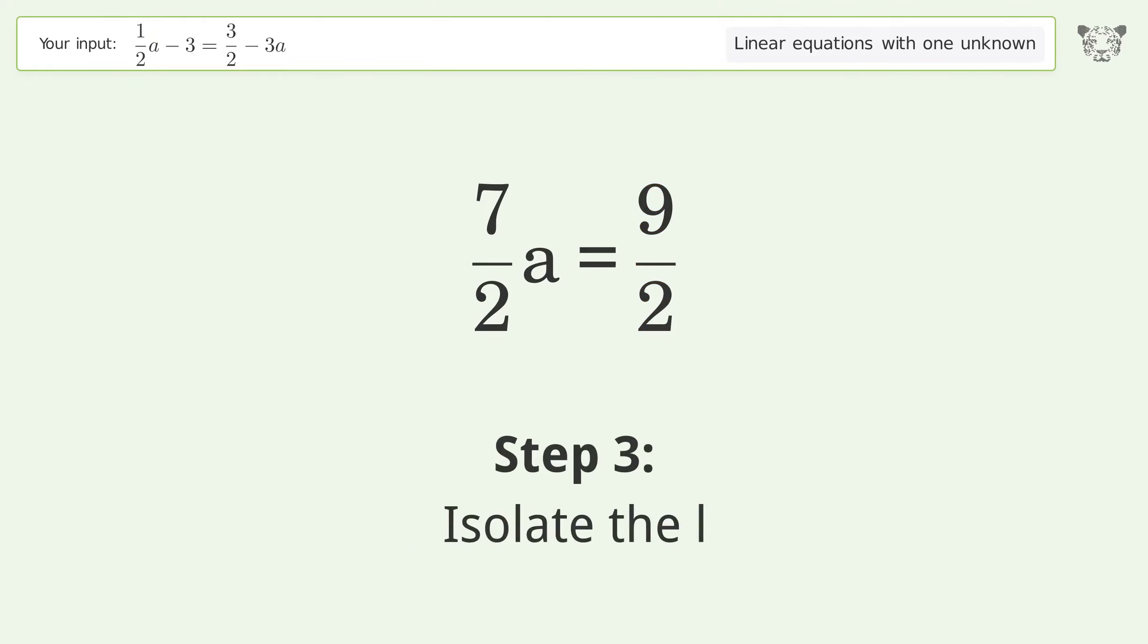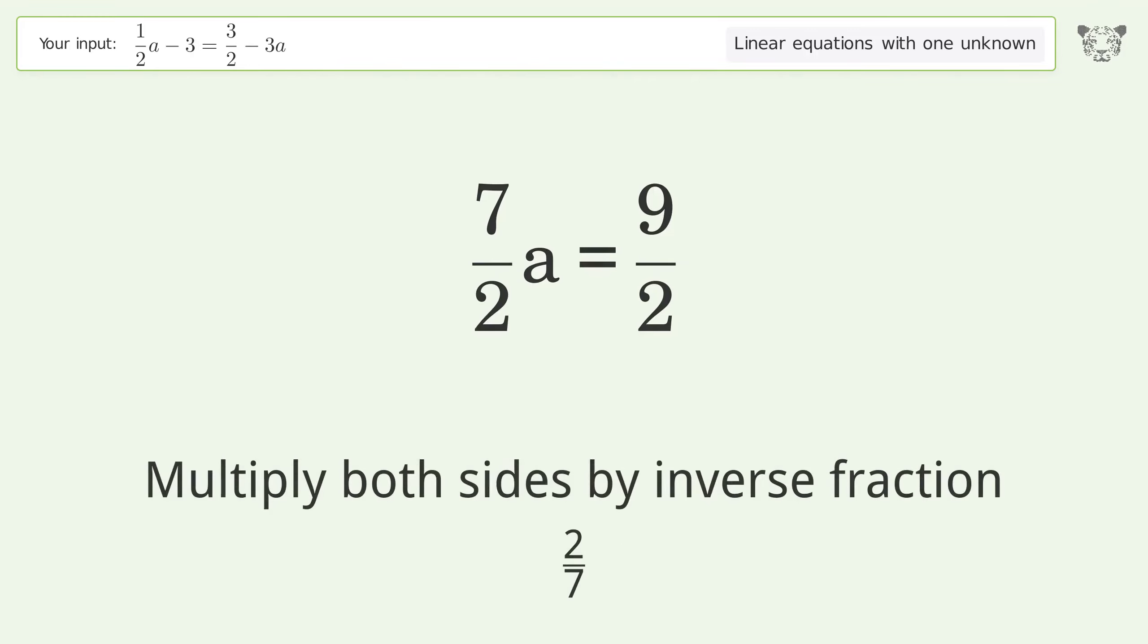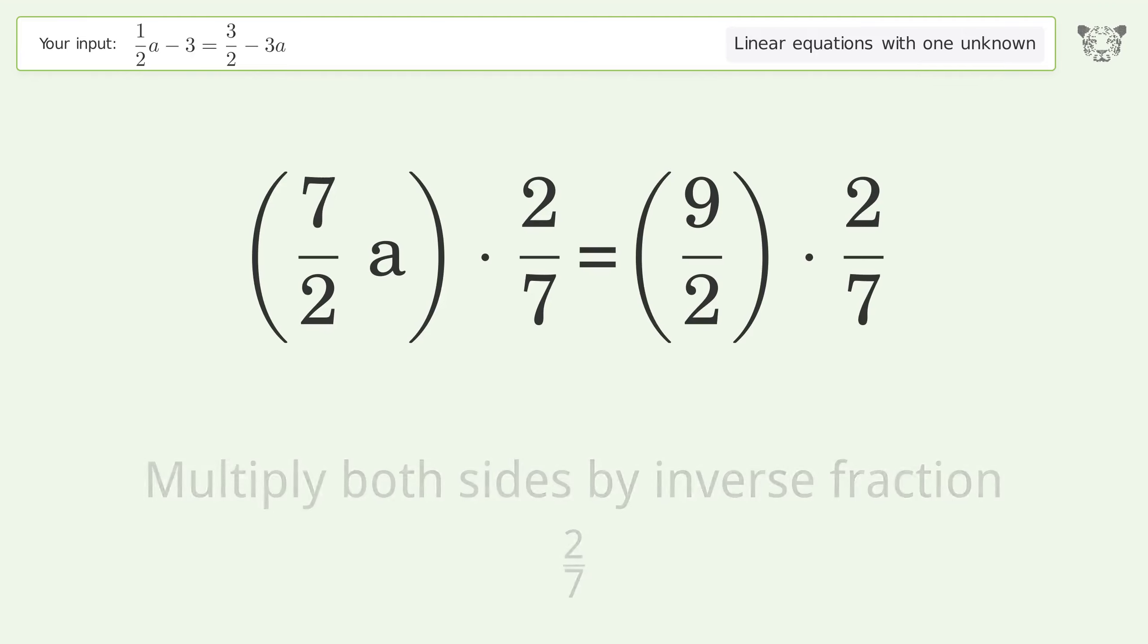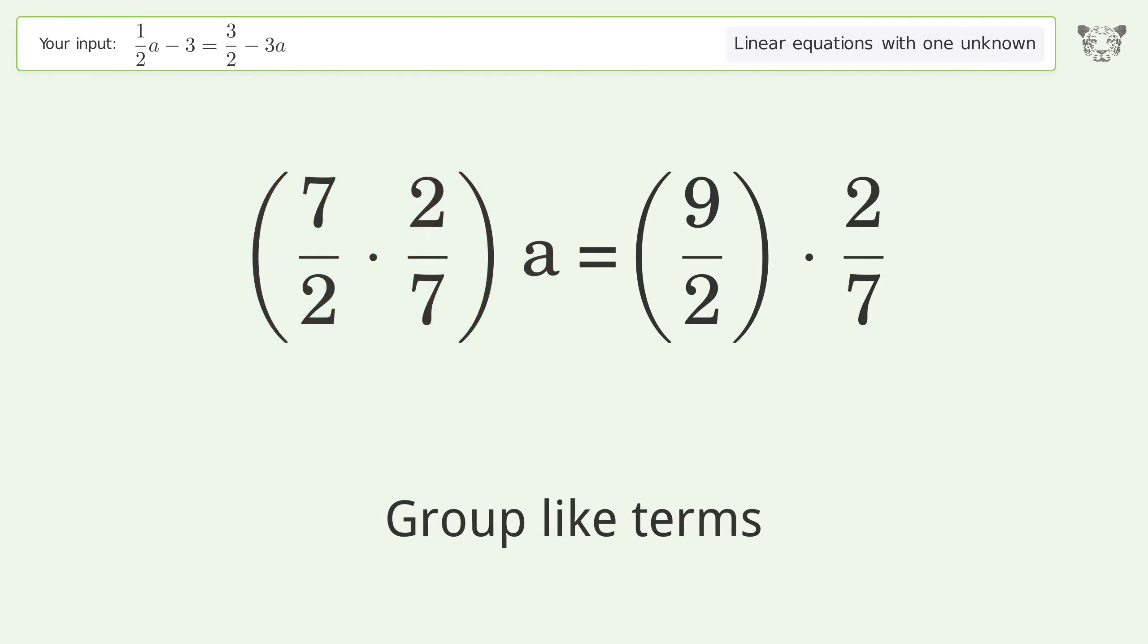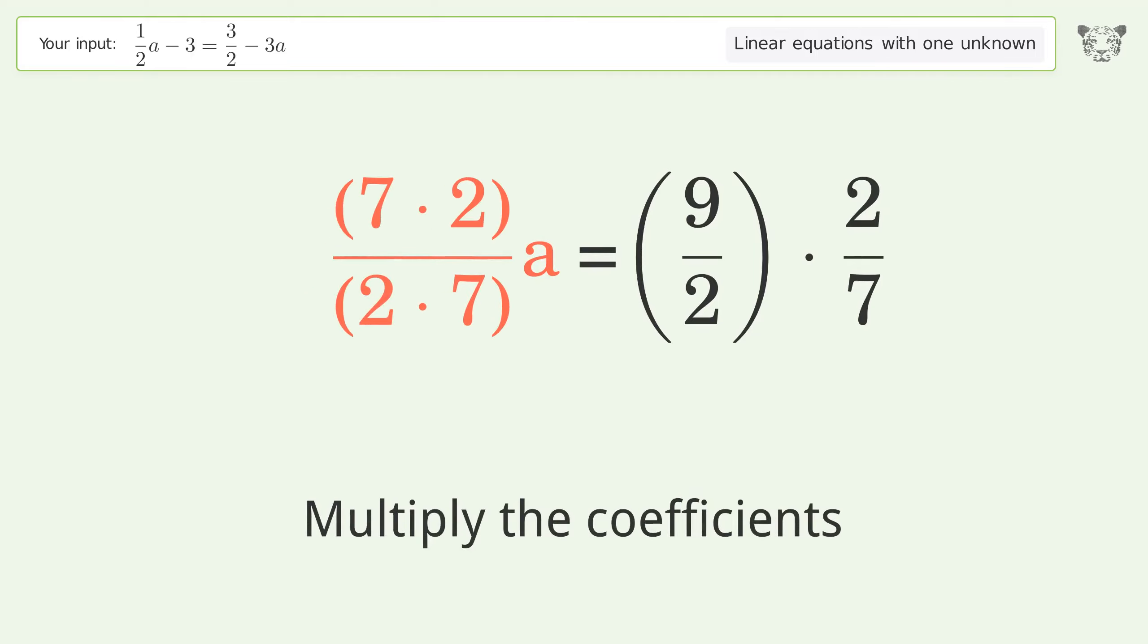Isolate the a. Multiply both sides by the inverse fraction two over seven. Group like terms. Group like terms. Multiply the coefficients. Multiply the coefficients. Simplify the fraction.